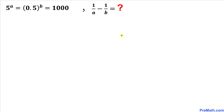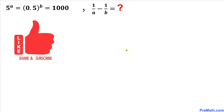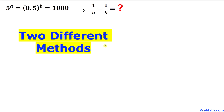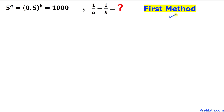Welcome to pre-math. In this video we have this exponential problem: 5 to the power a equals 0.5 to the power b equals 1000, and we are going to calculate the value of 1 divided by a minus 1 divided by b. Please don't forget to give a thumbs up and subscribe. I'm going to share two different approaches to solve this problem. Here's our very first method.